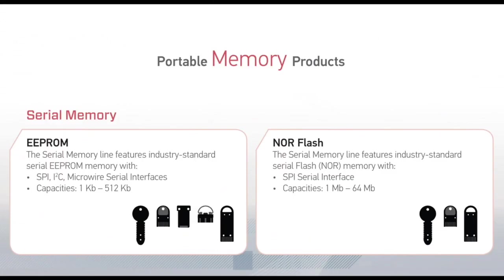On the Portable Memory Products page of the brochure, you will notice the product families and the icons showing which form factors are available for each product family. For the EEPROM-based serial memory products, you will see that all five form factors are available. For the NOR Flash-based serial memory products, the available form factors are the key, the slimline token, and the extended length slimline token.